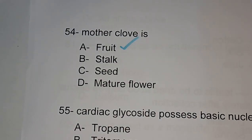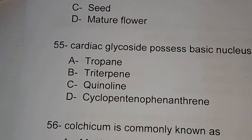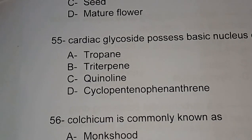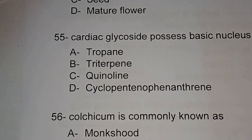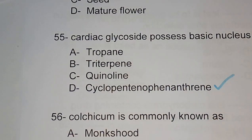Question number 55: cardiac glycosides possess the basic nucleus of — propane, triterpene, quinoline, or cyclopentanoperhydrophenanthrene. The correct answer is cyclopentanoperhydrophenanthrene.